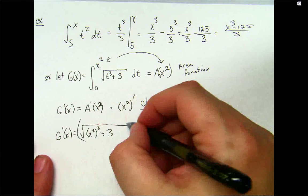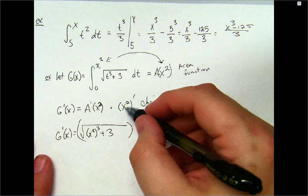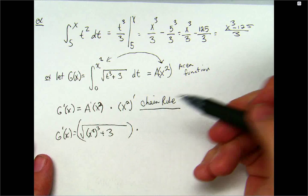I'm going to get x squared to the third power plus three. I'm going to take this whole thing and multiply it by the chain rule. Well, what's the derivative of x squared?